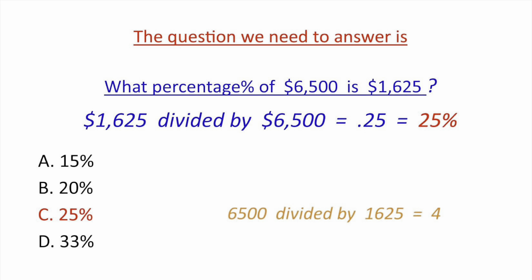But let's say you're sitting there with some stress and you think, 'I don't know what to divide what by — I'm going to get these all wrong.' Let's say you screw it up and do it backwards: you take $6,500 divided by $1,625, and your answer is 4. Well, look at your answer choices — 4 is not an option. So you know you did it wrong. Try dividing it the other way, and that's where you come up with 25%. If you get an answer like 4, don't stress out — just do it the other way, divide in the other direction, and you'll get the correct answer.